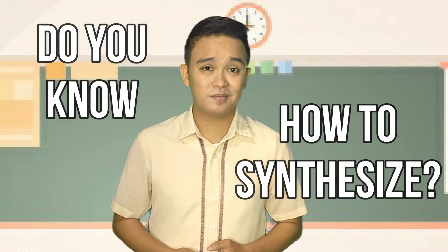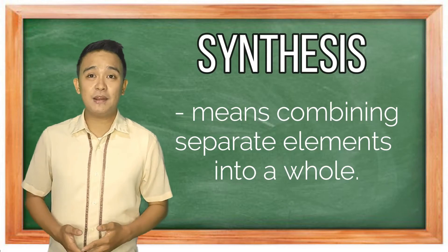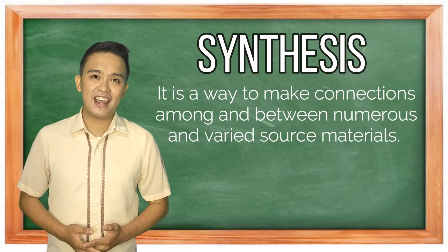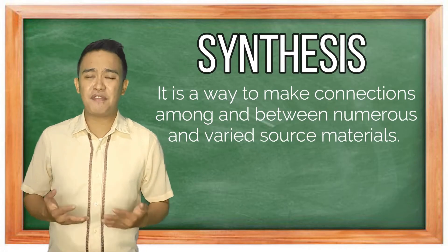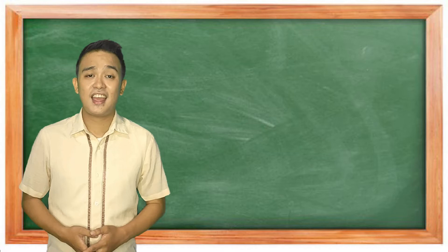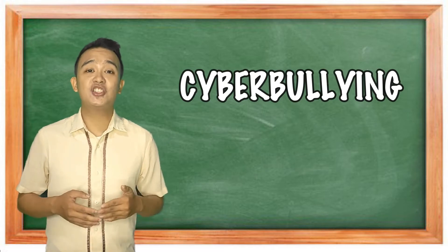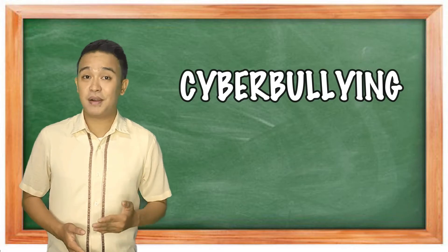Do you know how to synthesize? Let's find out first — what is synthesis? Synthesis means combining separate elements into a whole. It is a way to make connections among and between numerous and varied source materials. The review of literature is grouped by topic to create a full view of the literature relevant to your research question. Let us take cyberbullying as your research topic. You have to search, gather, and read related literature about cyberbullying. After, you need to combine all your gathered review of literature to create a picture of what your research topic would be about.